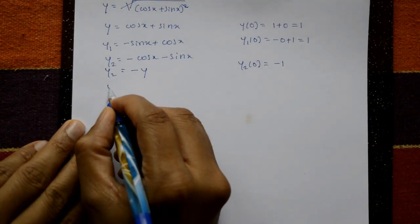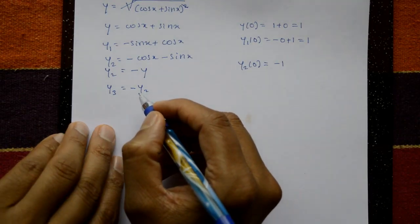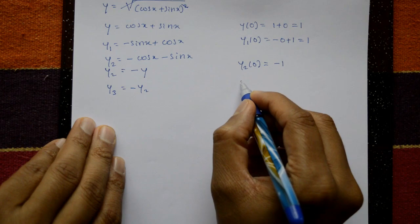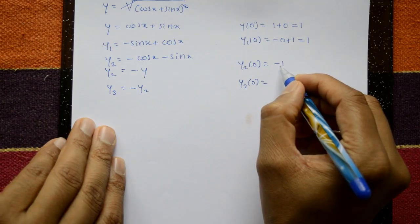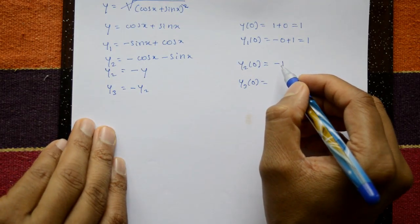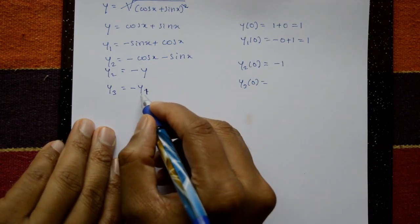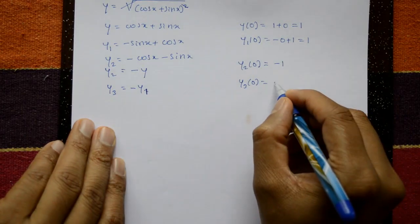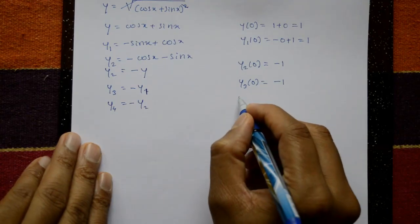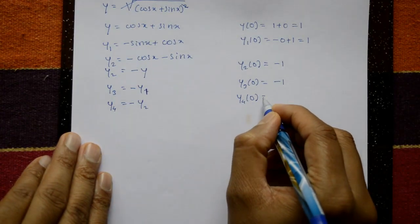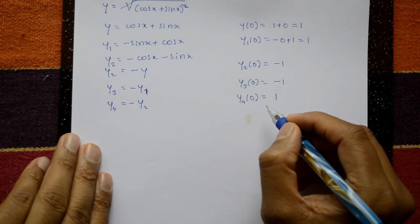Differentiate to get y3: y3(x) = −y2, so y3(0) = −y2(0). Since y2(0) = −1, but noting that differentiation of y gives y1, y3(0) = −y1(0) = −1. Differentiate again: y4 = −y2, so y4(0) = −y2(0) = −(−1) = 1.